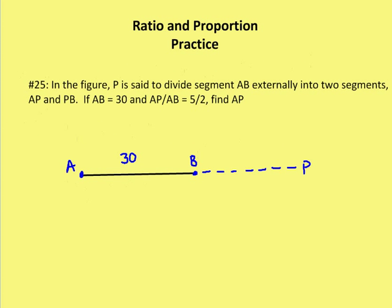Next question, number 25. In the figure, P is said to divide segment AB externally. So P is on the external end of AB into two segments, AP and PB. If AB is equal to 30 and AP to AB is 5 to 2, then find AP.